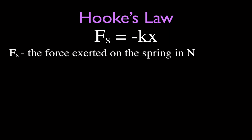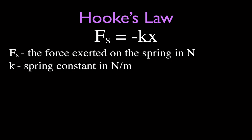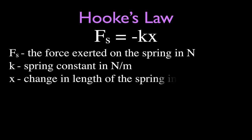fs is simply the force exerted on the spring, measured in newtons (N). k is the spring constant, measured in newtons per meter. x is the change in length, measured in meters. Everything we go over in this video applies whether the springs are horizontal or vertical.